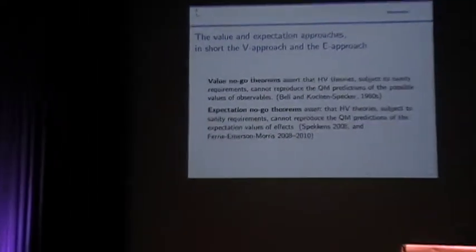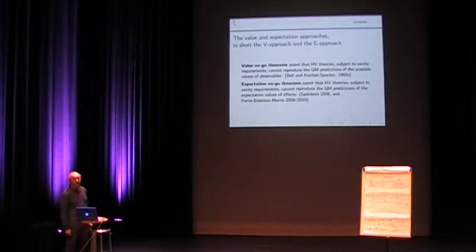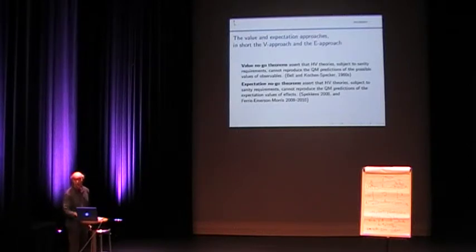So in the classical case the no-go theorem says that hidden variables cannot reproduce the quantum mechanics predictions of the possible values of the observables.